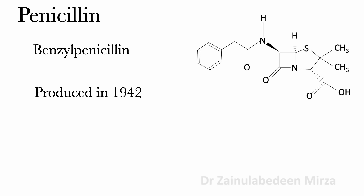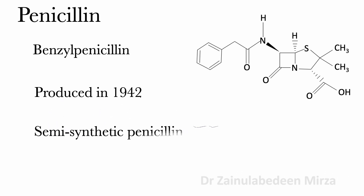The penicillin nucleus was produced in 1957, and semi-synthetic penicillin with different properties is synthesized by adding different side chains.